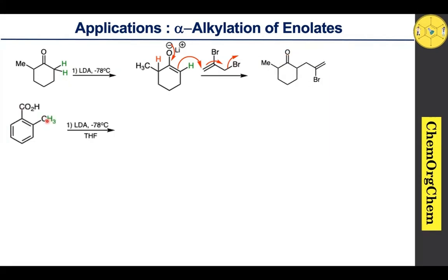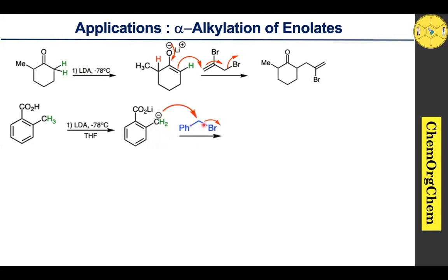LDA can also take the proton from less acidic positions. Consider this example having a carboxylic acid and a benzylic position. LDA first takes the proton from the carboxylic acid, and then takes the proton from the benzylic position, generating the corresponding anion. This anion then reacts with benzyl bromide to yield the corresponding product, followed by workup to give the corresponding alkylated carboxylic acid as the final product.